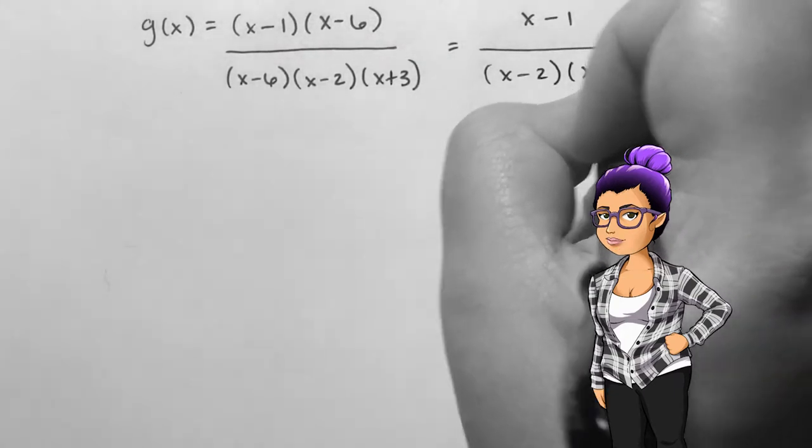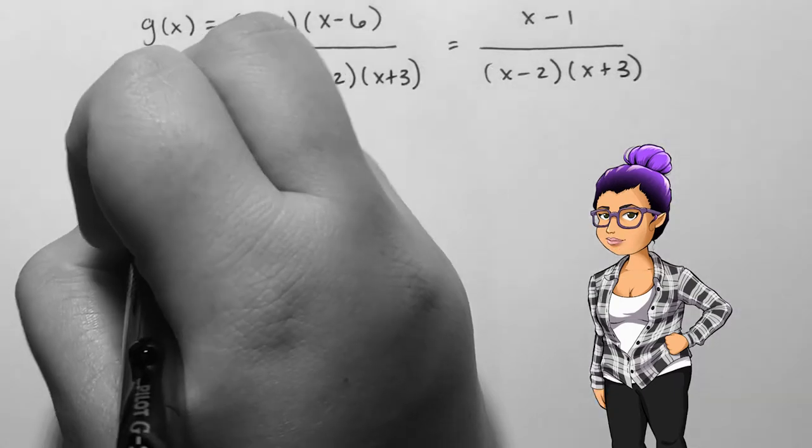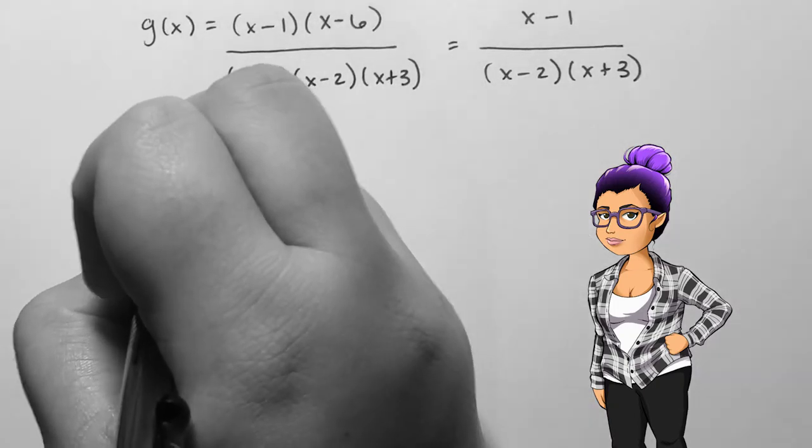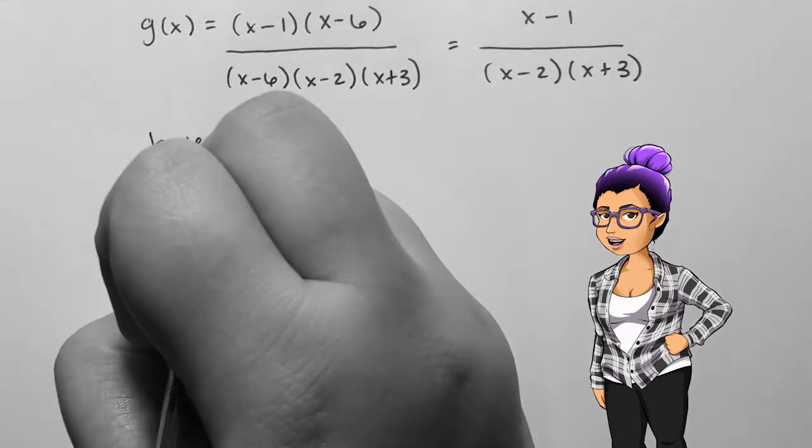It looks like I could remove a discontinuity right off the bat and simplify down to x minus 1 divided by x minus 2 times x plus 3. I should note that this means there is a hole in the graph at x equals 6.